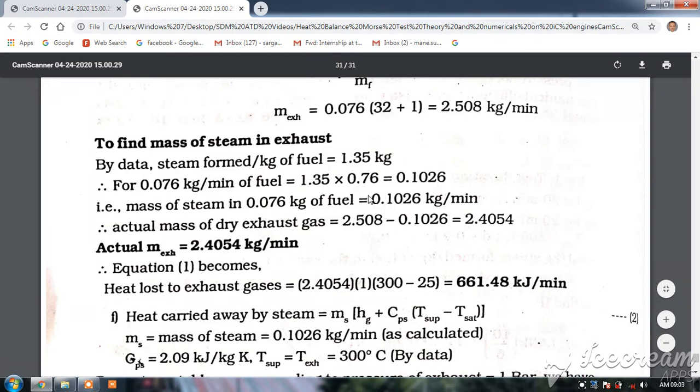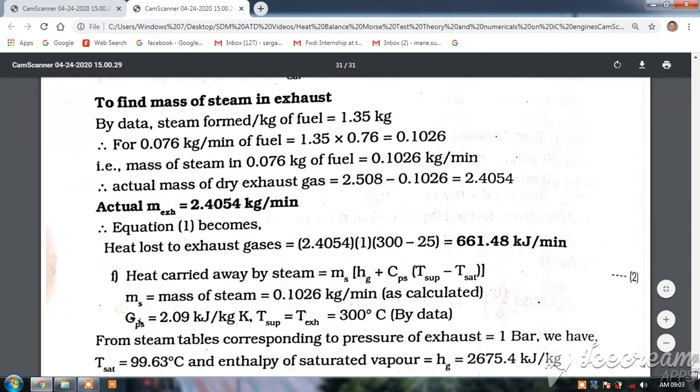Actual mass of dry gases is 2.5 - 0.1026 = 2.4 kg per minute. So heat loss to exhaust gases is m × c_p × ΔT = 2.4 × 1 × (300 - 25) = 661 kilojoules per minute.